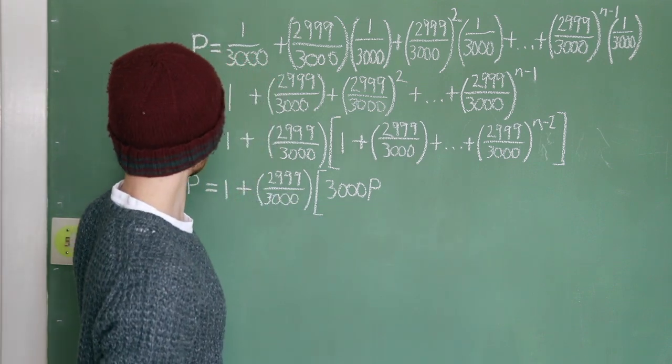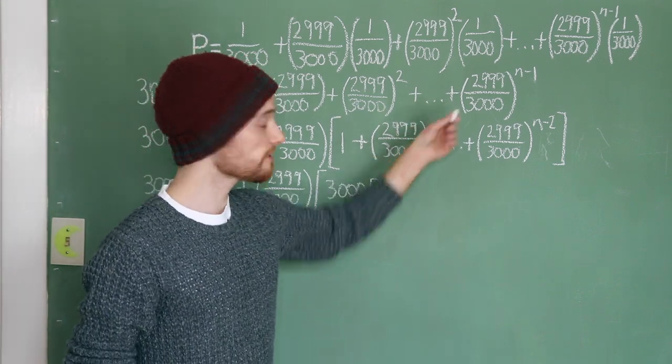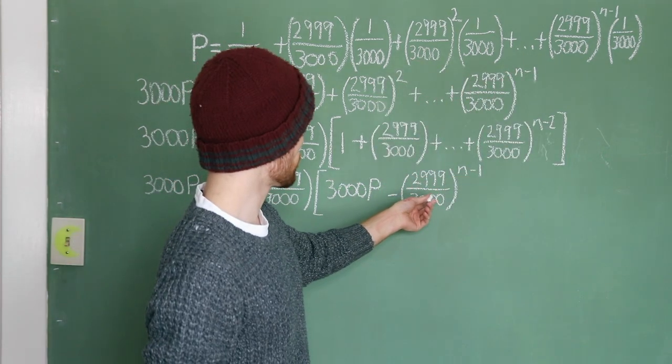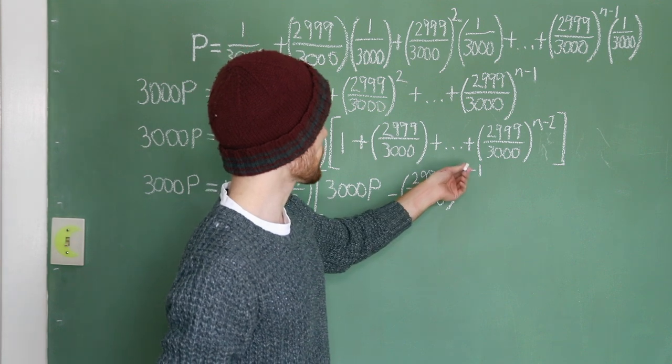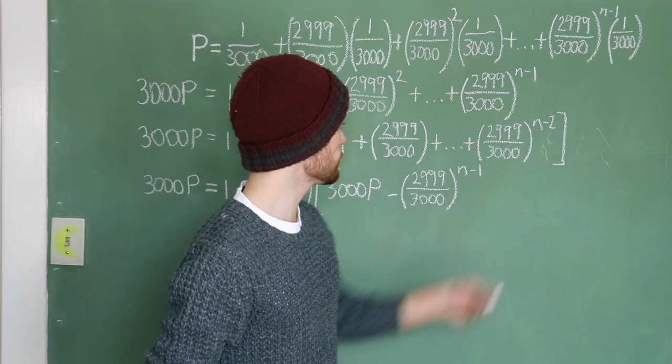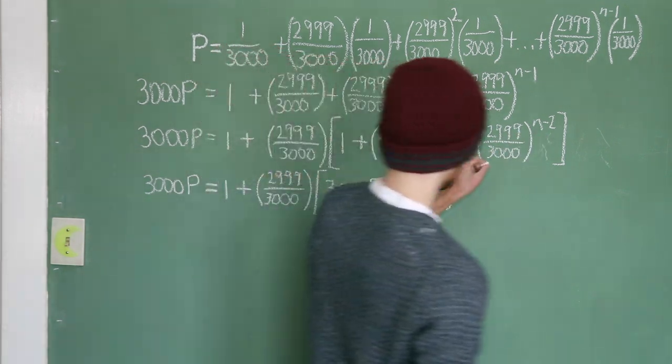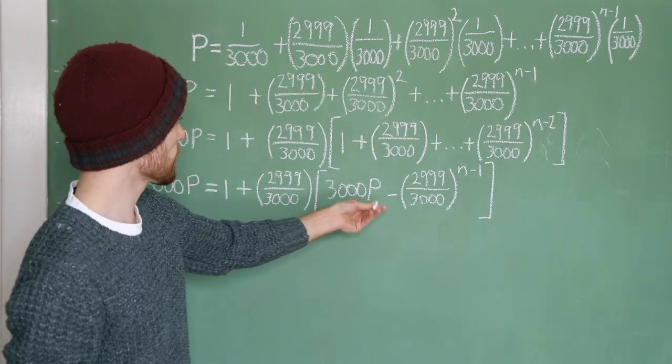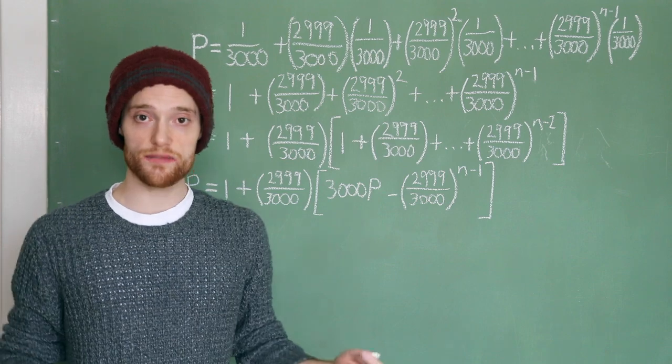So, 3,000p gives us everything we want, plus that one final term that we don't want. So, let's just subtract that. Minus 2,999 over 3,000 to the power of n minus 1. That gives us to the n minus 2 term. And then, close bracket, and now look, we've gotten rid of the ellipses. Now, we can see everything we're dealing with here.